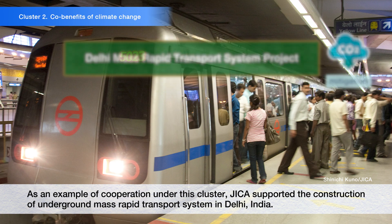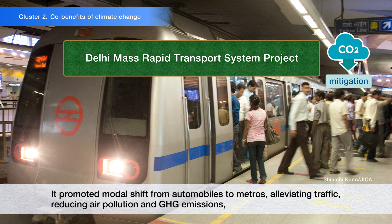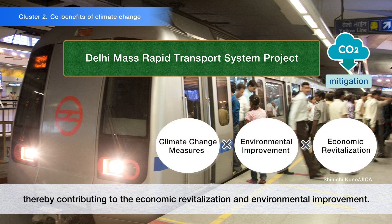As an example of cooperation under this cluster, JICA supported the construction of an underground mass rapid transport system in Delhi, India. It promoted modal shift from automobiles to metros, alleviating traffic, reducing air pollution and greenhouse gas emissions, thereby contributing to economic revitalization and environmental improvement.